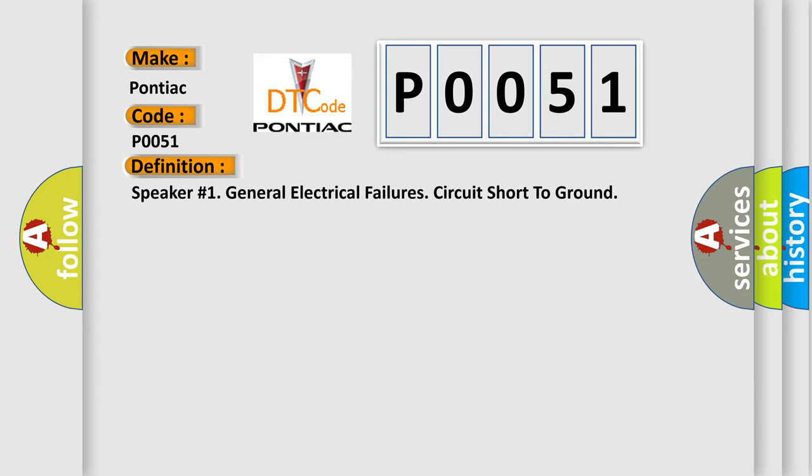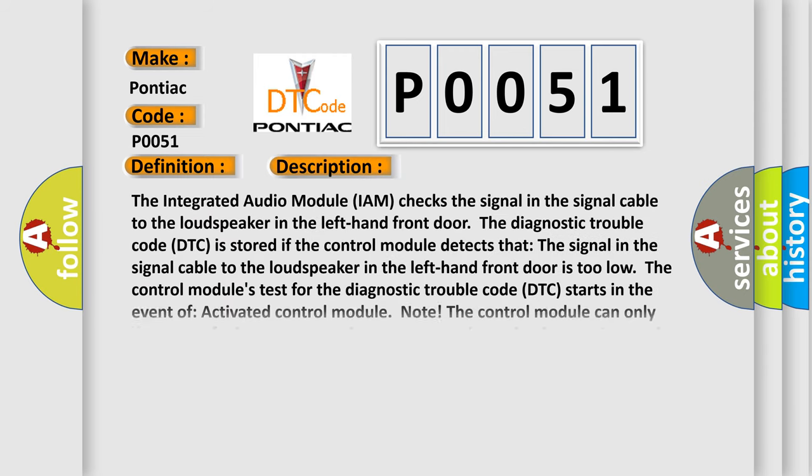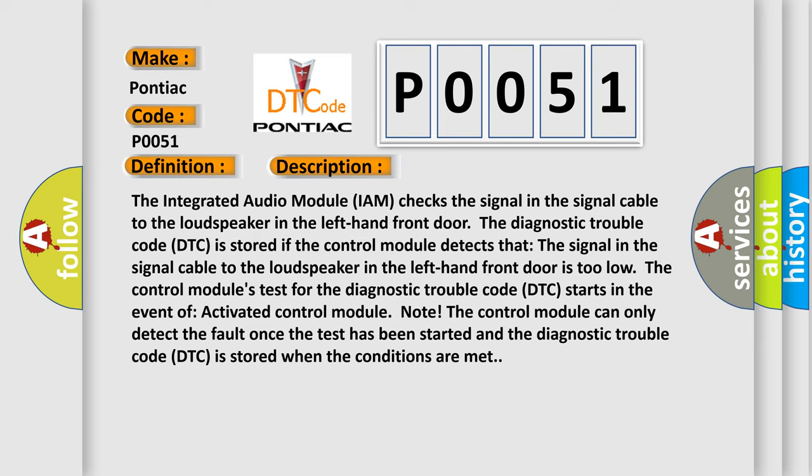And now this is a short description of this DTC code. The integrated audio module (IAM) checks the signal in the signal cable to the loudspeaker in the left-hand front door. The diagnostic trouble code (DTC) is stored if the control module detects that the signal in the signal cable to the loudspeaker in the left-hand front door is too low. The control module's test for the diagnostic trouble code (DTC) starts in the event of activated control module. Note: The control module can only detect the fault once the test has been started, and the diagnostic trouble code (DTC) is stored when the conditions are met.